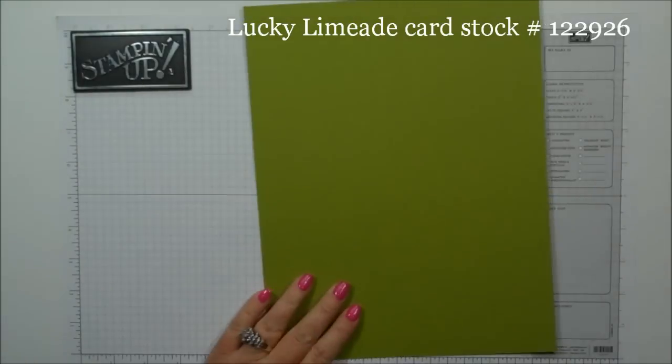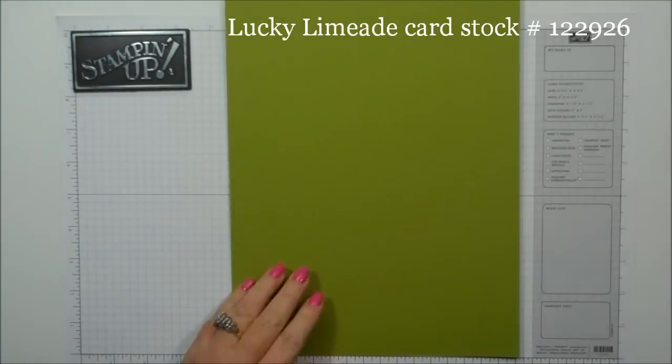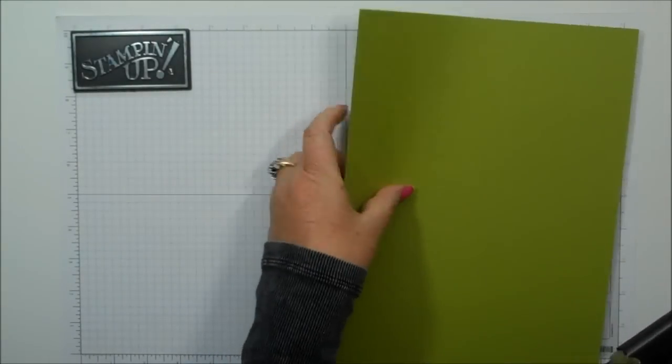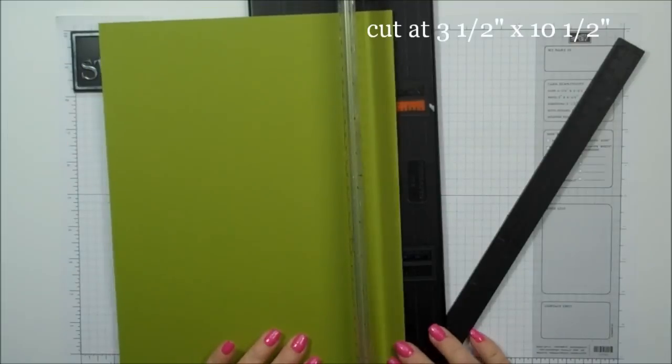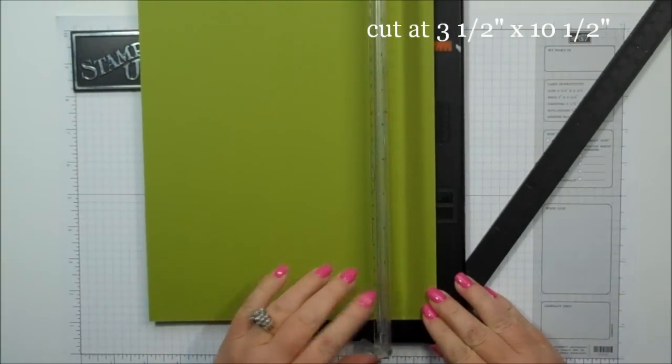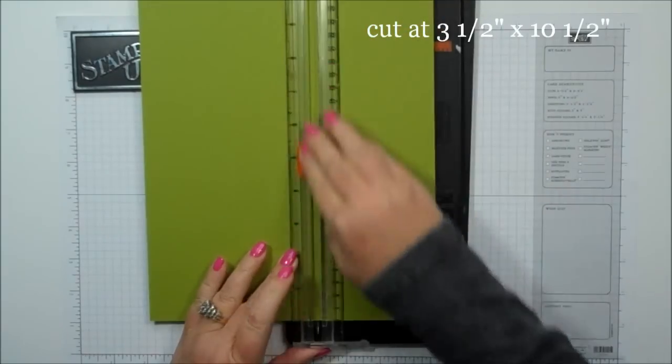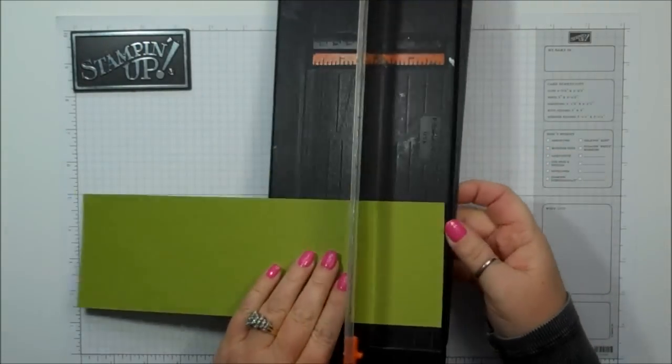I'm using a piece of Lucky Limeade and this is the 8 1/2 by 11. I'm going to cut this at 3 1/2 by 10 1/2.